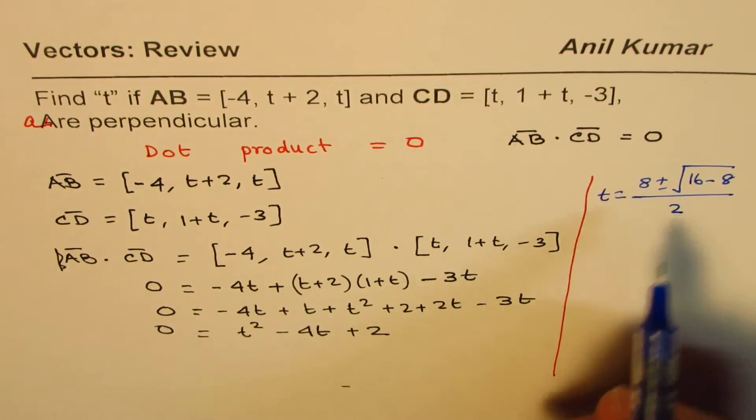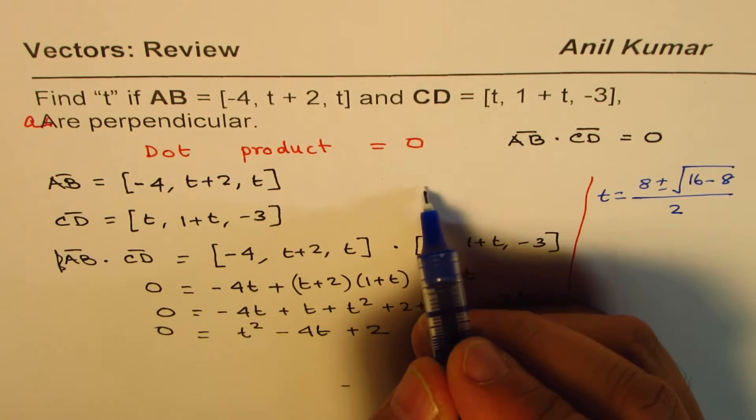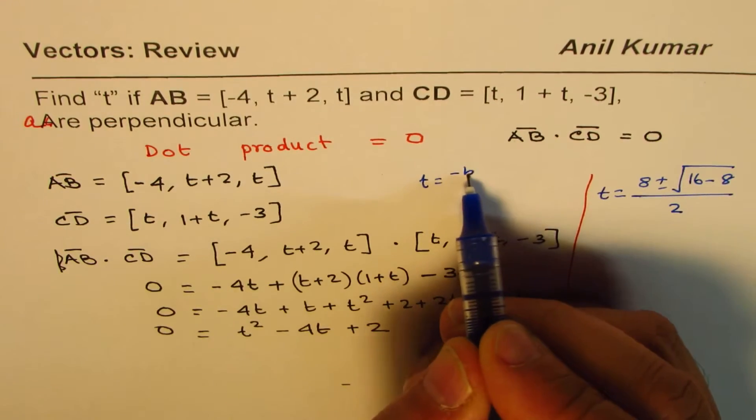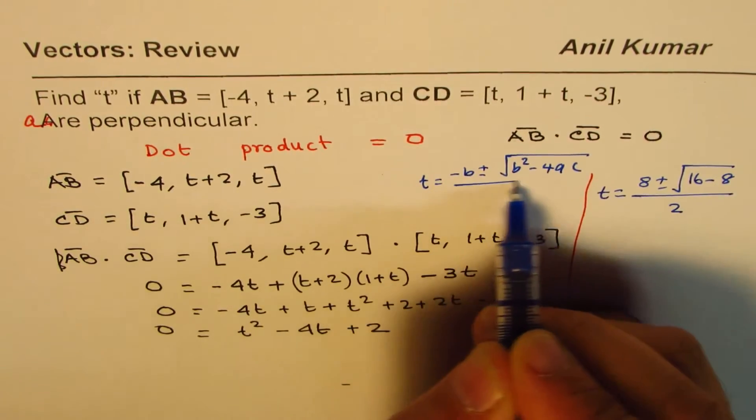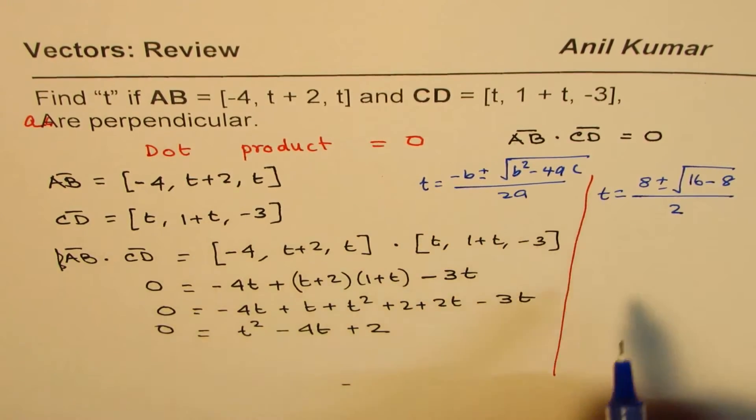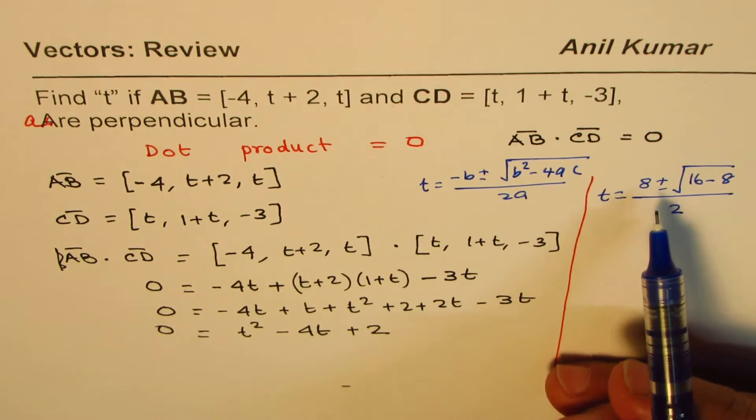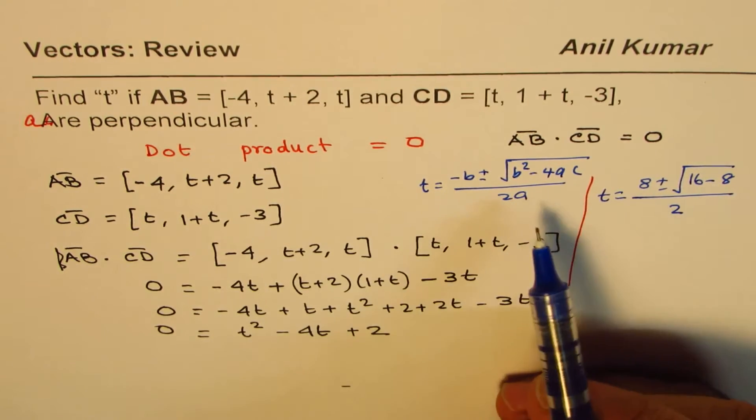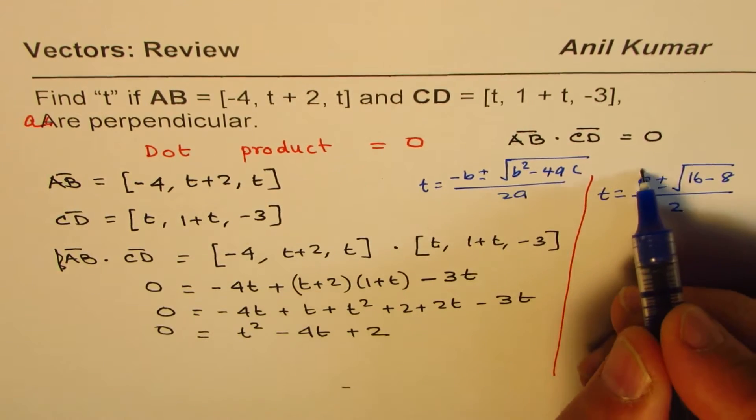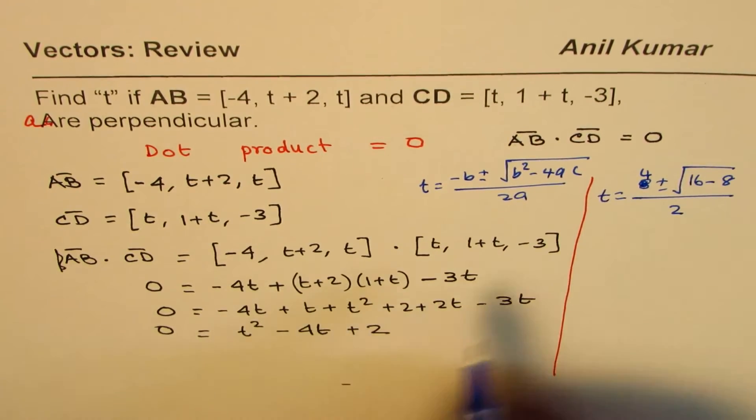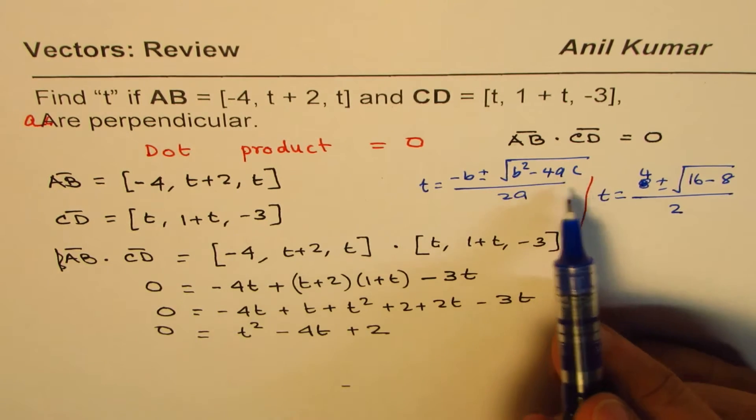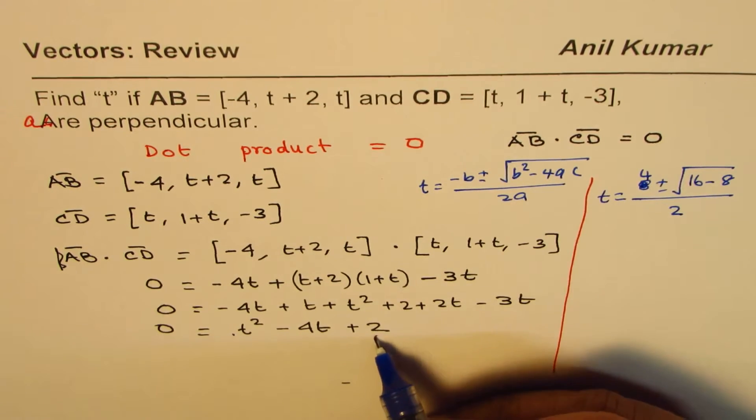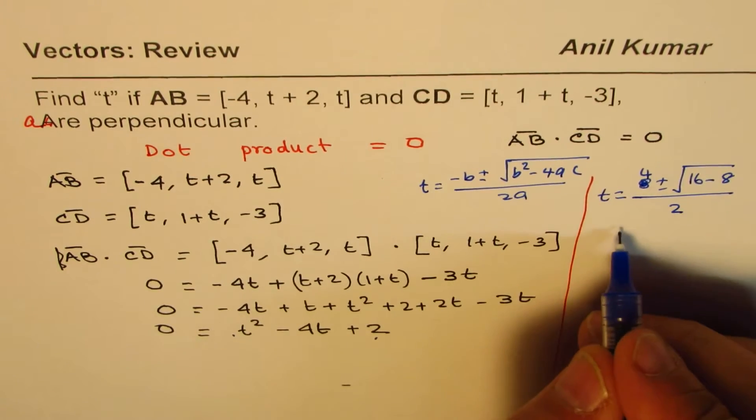So, we use the quadratic formula which is t equals to minus b plus minus square root of b square minus 4ac divided by 2a. This is the formula we use where b is 4, 4 square which is 16 minus 4ac, 4 times a is 1, c is 2, so 8 divided by 2.